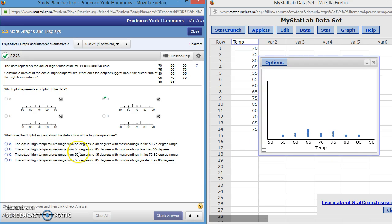It says the actual high temperatures range from 55 to 85. That's true. They start at 55 and our last dot's at 85. With most readings in the 60 to 75 degree range. That looks pretty close. Between 60 and 75, that accounts for 2, plus 4 is 6, plus 2 is 8, 9, 10, 11. That's 11 of our 14 data points. So it appears most of our temperatures are in the 60 to 75 degree range. Let's just check the other choices to see. It says with most readings less than 55. We don't have any readings that are even 50, much less. We don't have anything less than 55.